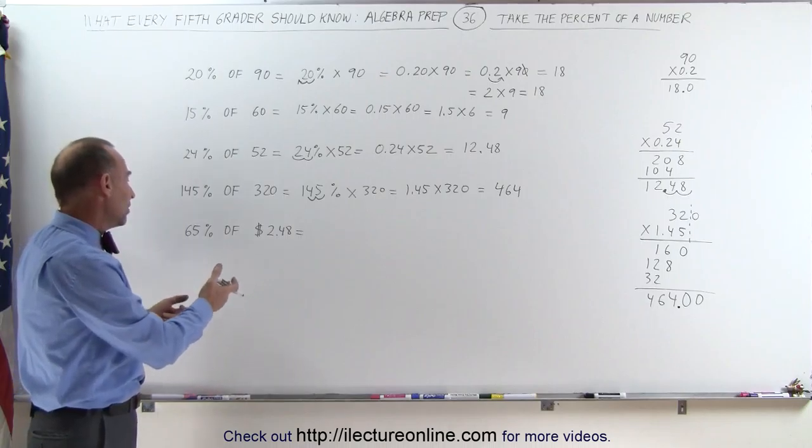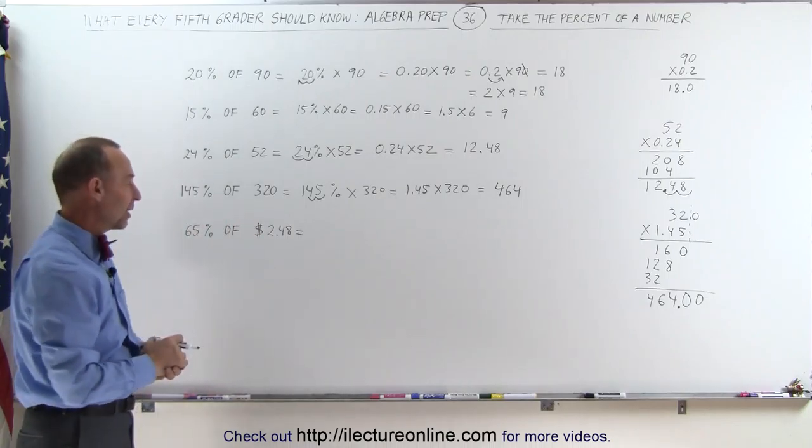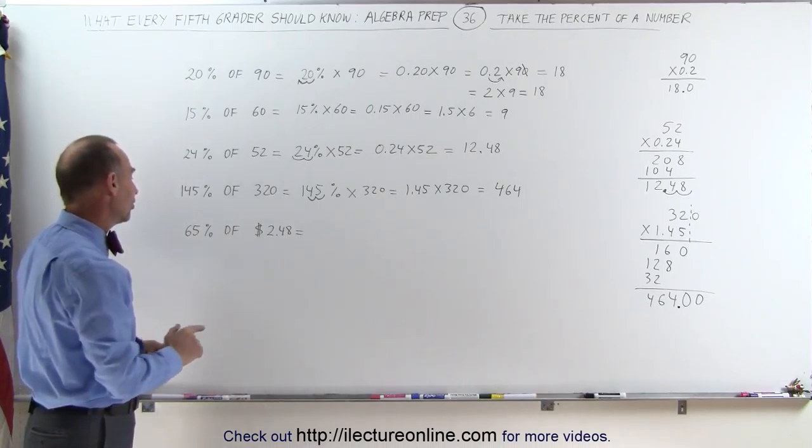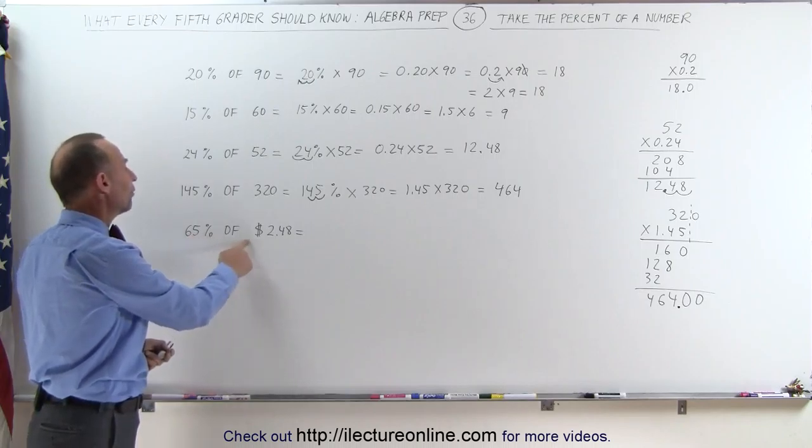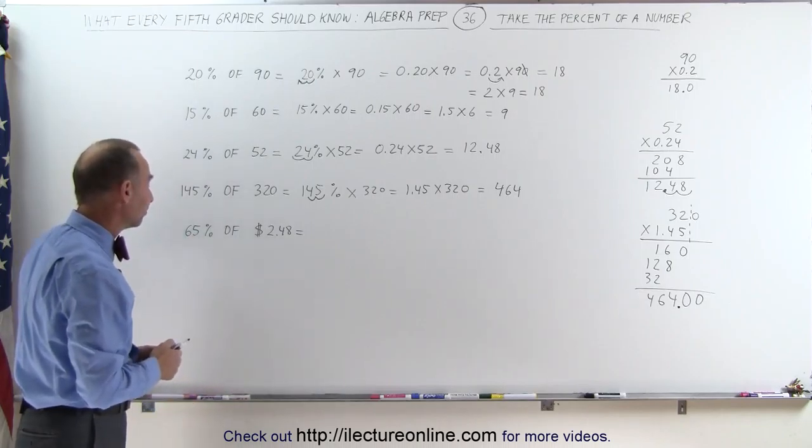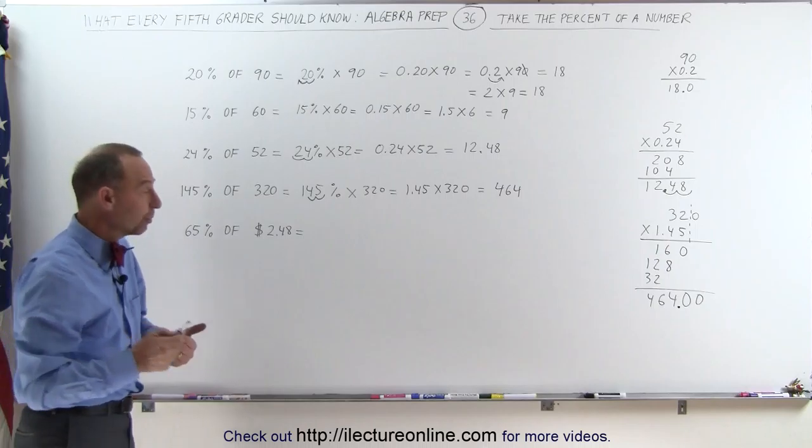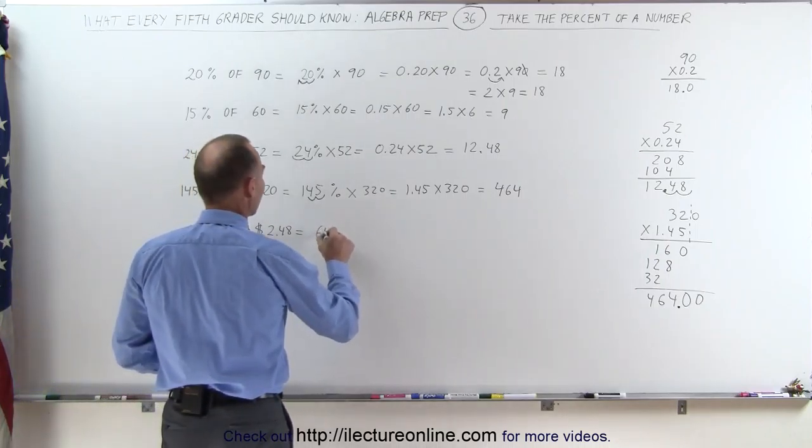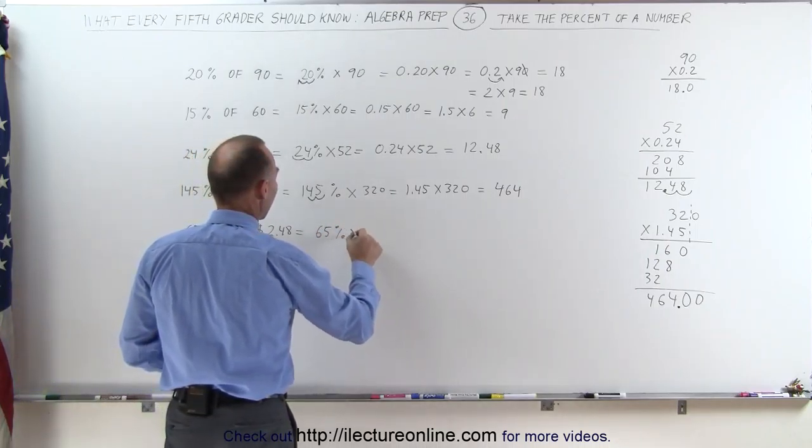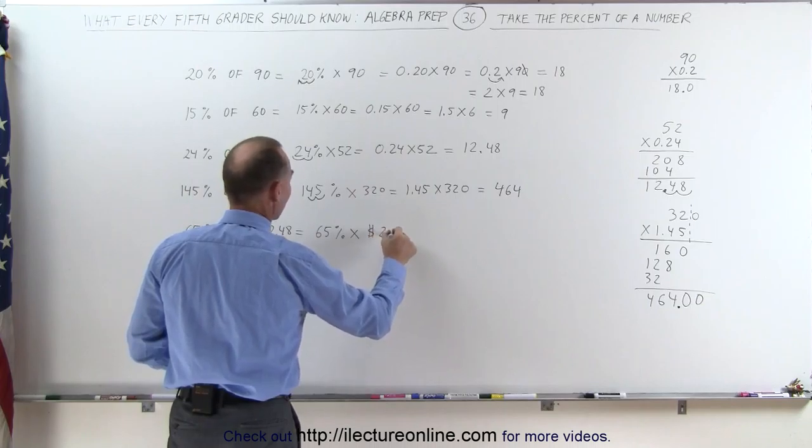Okay, the last one—we put a dollar sign in there just to make it a little more interesting. The question is: what is 65% of $2.48? Again, that means we're multiplying 65% times $2.48.